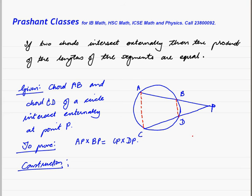We prove these two triangles similar. This will be the common angle. Angle BDP is equal to angle CAP. The exterior angle of the triangle is equal to the interior opposite angle. Hence, we put the ratio and we will get it automatically.